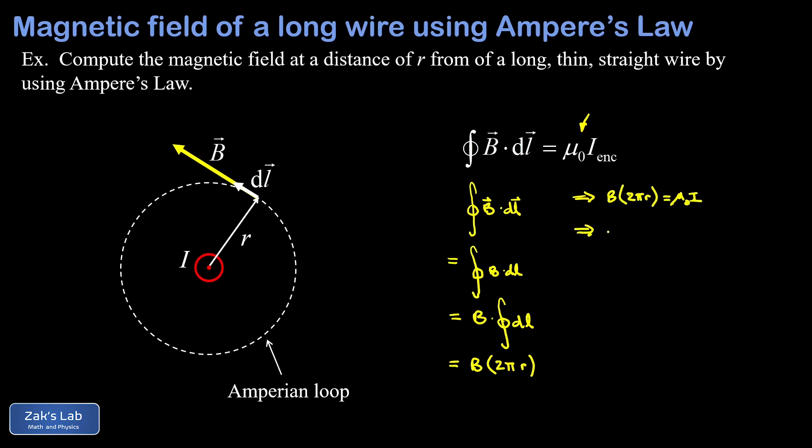Now we solve for B, and we find that the magnitude of our magnetic field at a distance R from this long straight wire is μ₀I over 2πR.